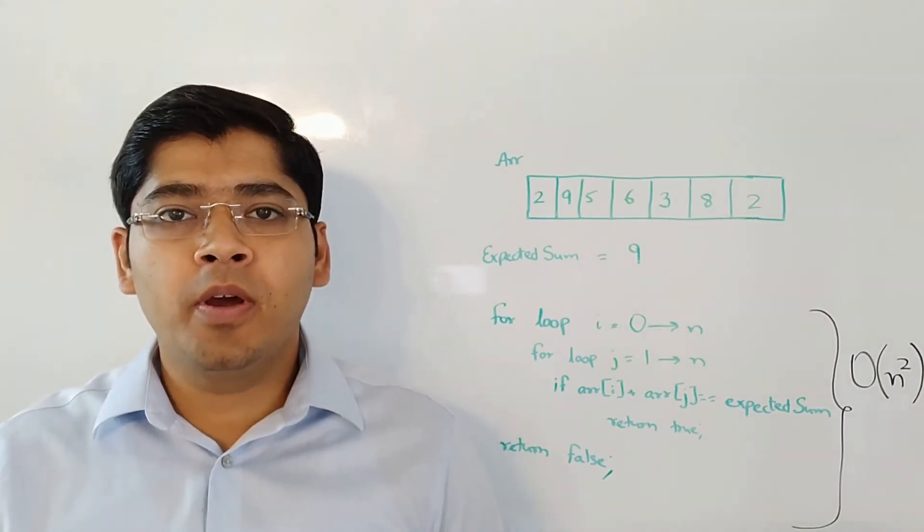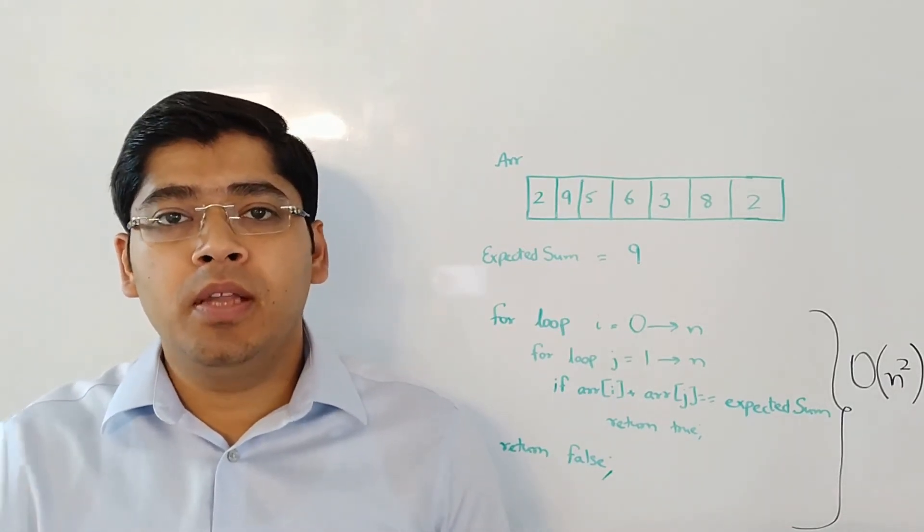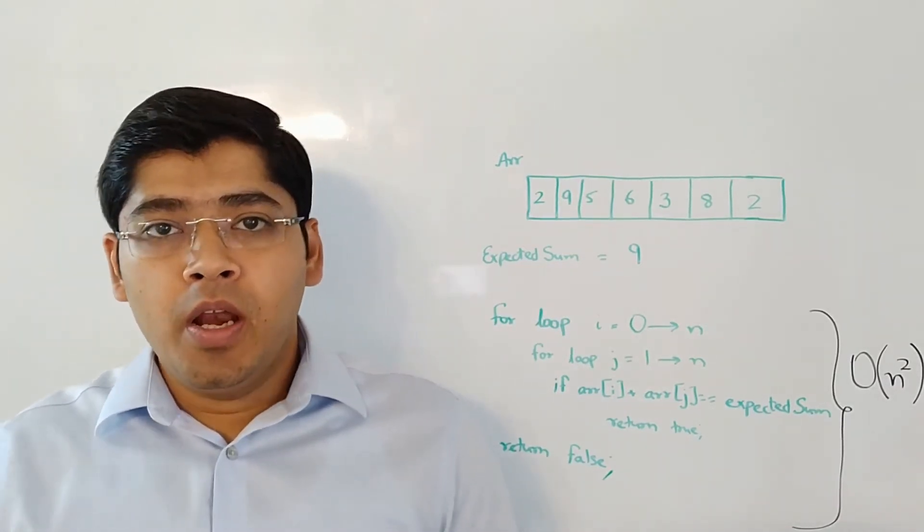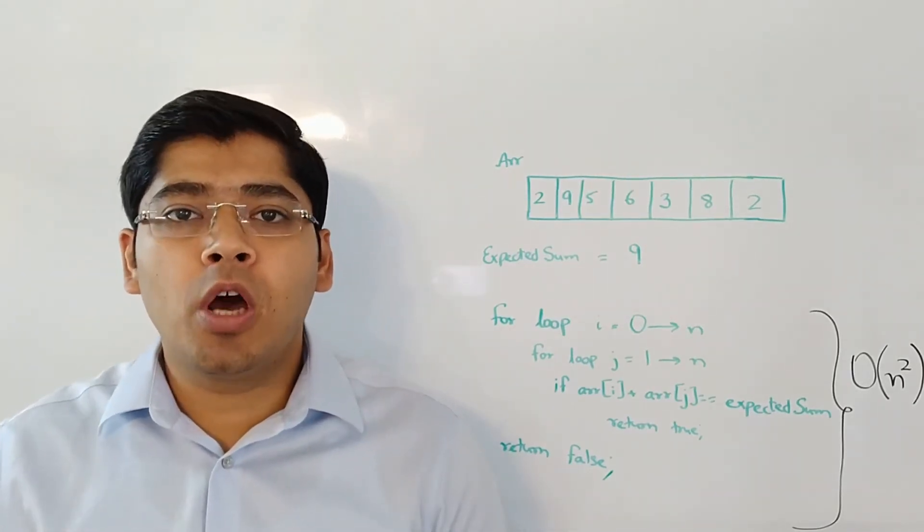At this point, the interviewer might ask you how we can do better than O(n²). Now you should start thinking of a better solution, a more optimal solution.